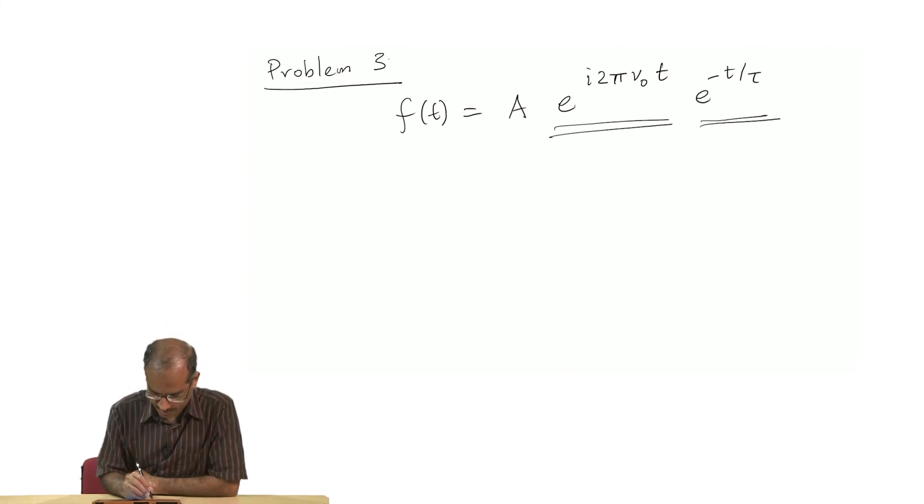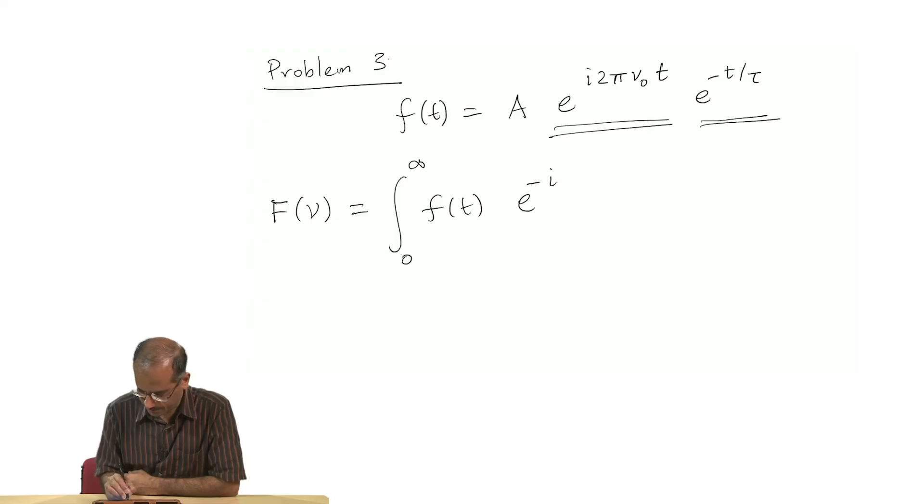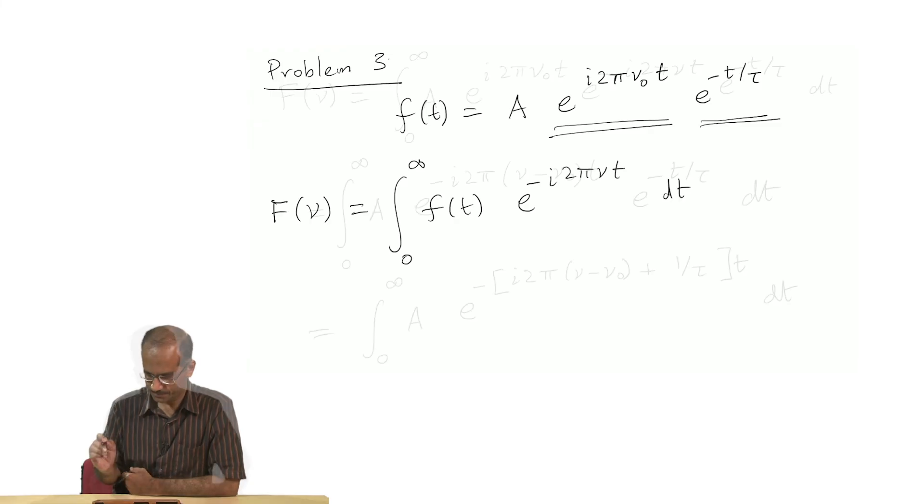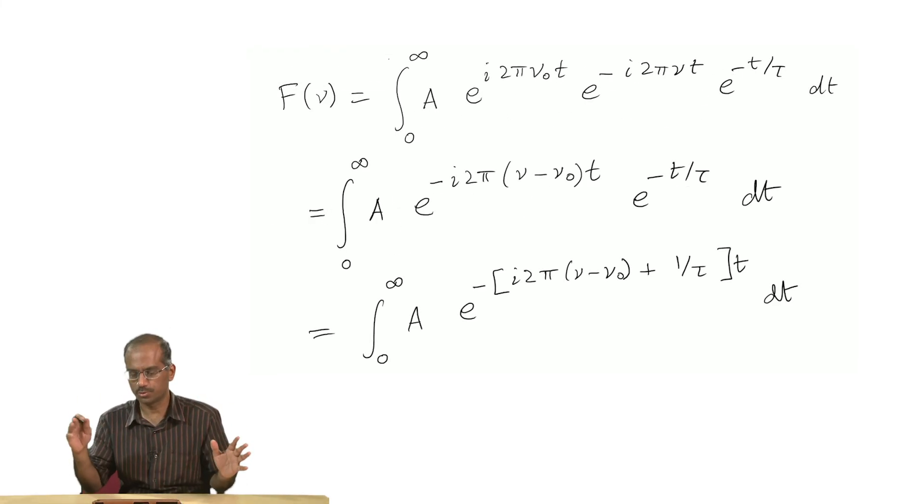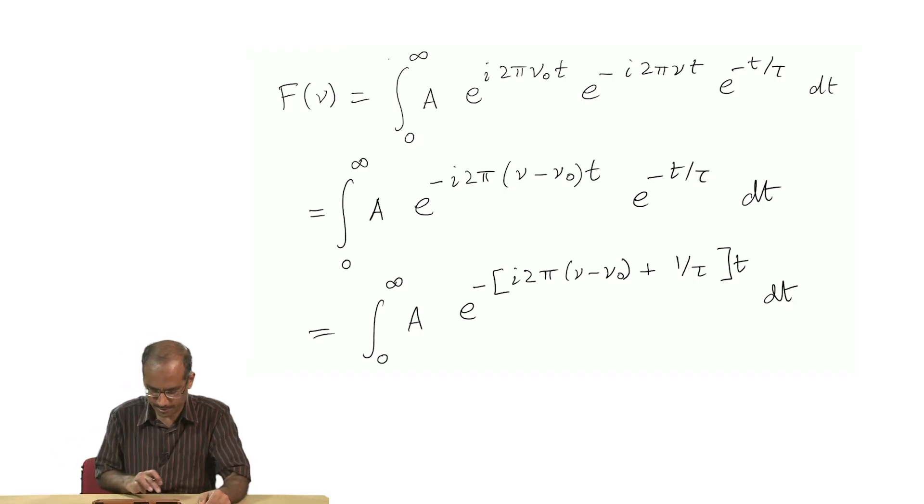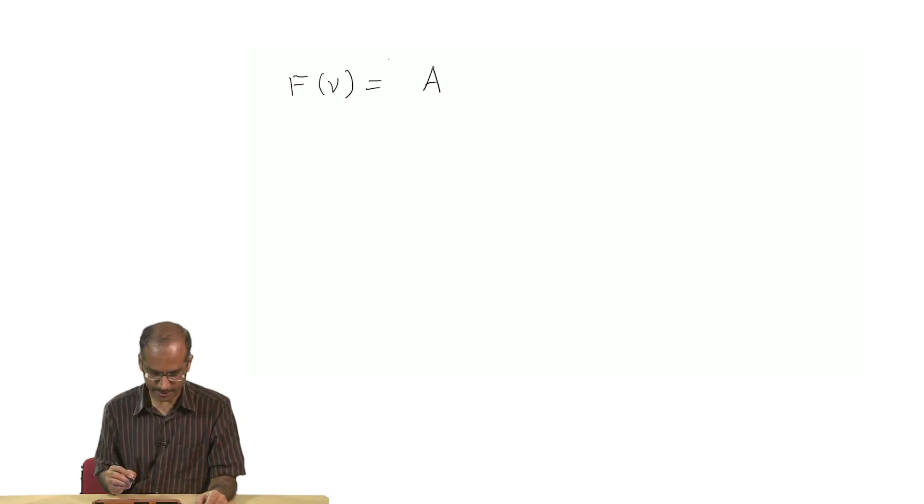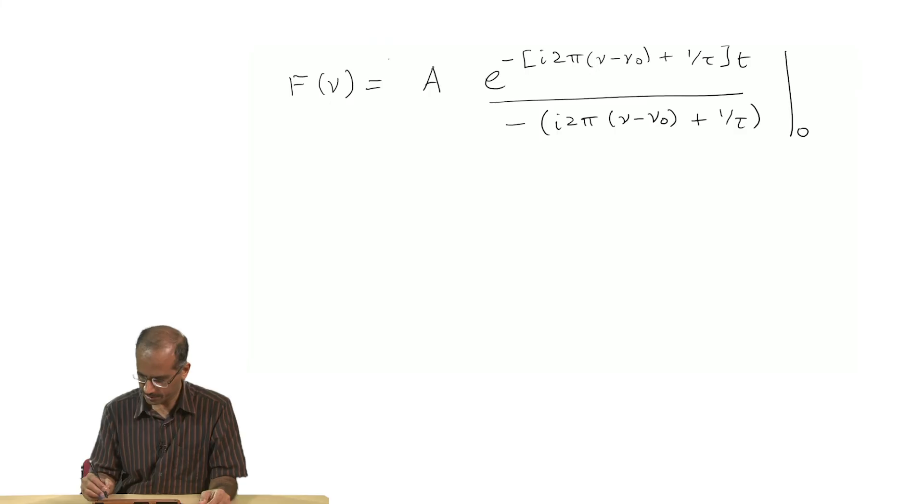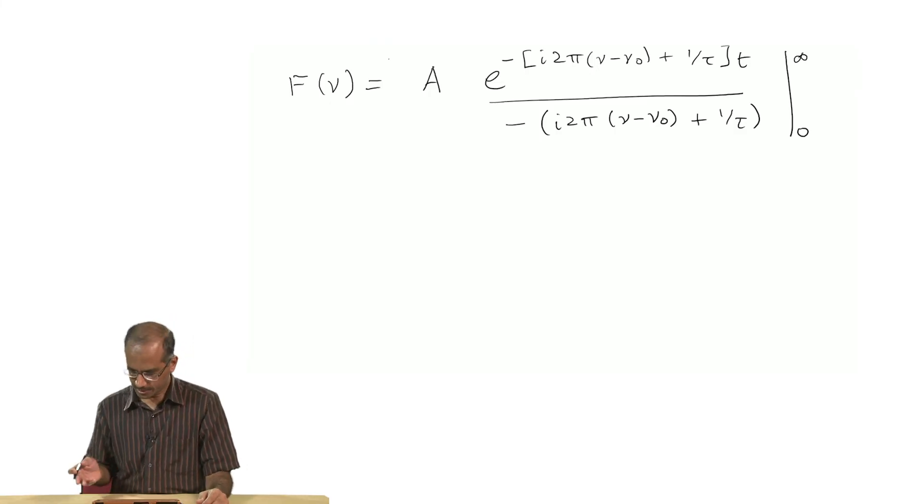What I want is to find the Fourier transform of this. f of ν would be given by, since time goes from 0 to infinity, we shall integrate from 0 to infinity f of t e^(-i2πνt) dt. I have written it as e^(-some constants into t) integrated over t. This integral is easy to do, simply an exponential integral.